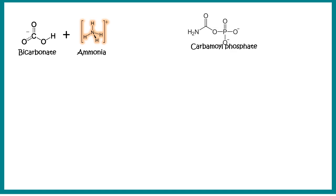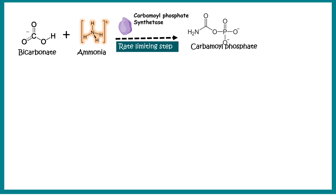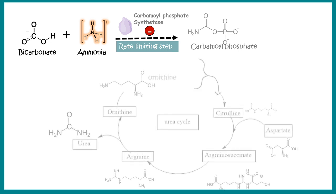Carbamoyl phosphate synthetase 1 (CPS1) catalyzes the synthesis of carbamoyl phosphate from ammonia and bicarbonate. This is the rate-limiting step because it occurs very slowly and can be regulated. If this step is negatively regulated, no carbamoyl phosphate is generated and the urea cycle is shut down. If positively modulated, a large amount of carbamoyl phosphate is produced and the cycle runs actively.